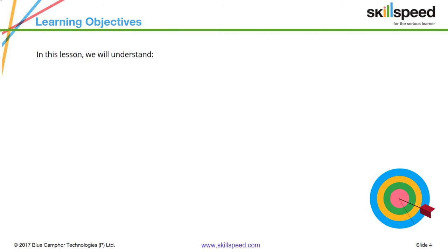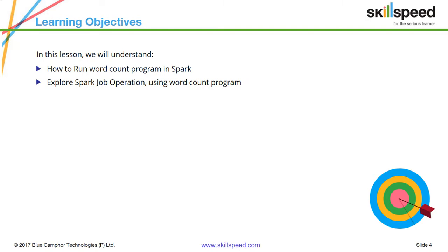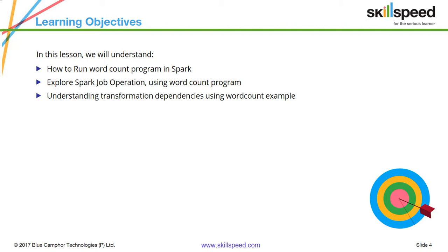In this lesson, first we will write a very simple word count example using Spark, and then we will explore the job operation using the word count program. We will understand different types of transformations such as narrow and wide, and we will also understand stages and their dependencies using this single simple word count program. We'll also look into scheduling and shuffling in Spark.